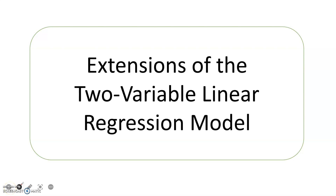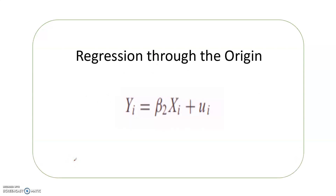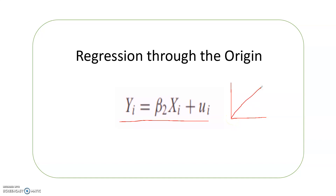Today we are going to discuss extensions of the two-variable linear regression model — specifically, regression through the origin, also known as the zero intercept model. In such a model, we do not have an intercept term, so the regression function, when plotted on a graph, starts from the origin itself. As we can see in this function, yi is equal to beta 2 xi plus ui — there is no intercept term, no beta 1.